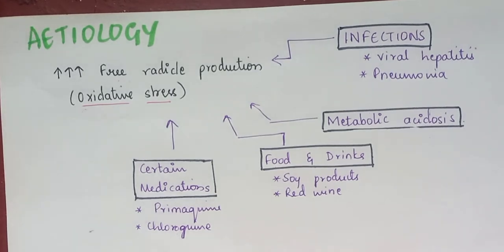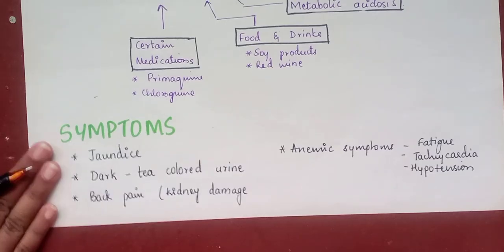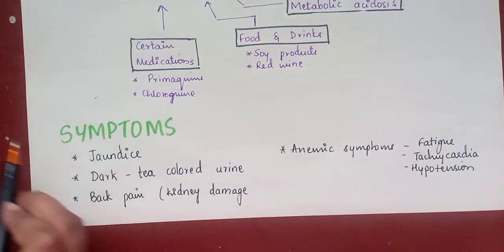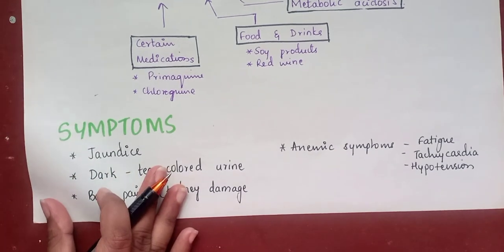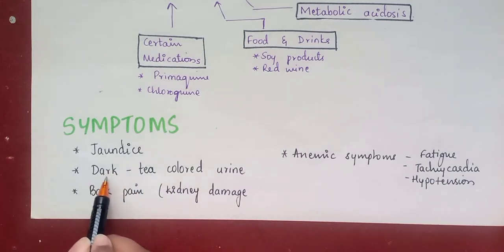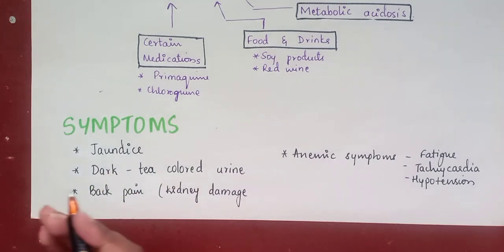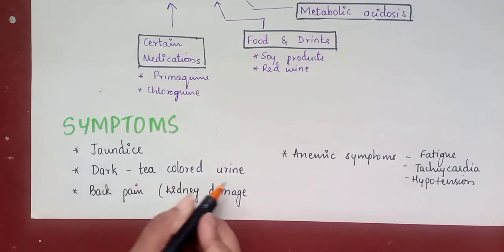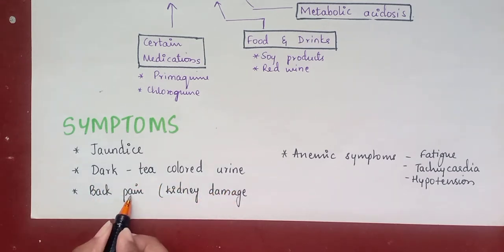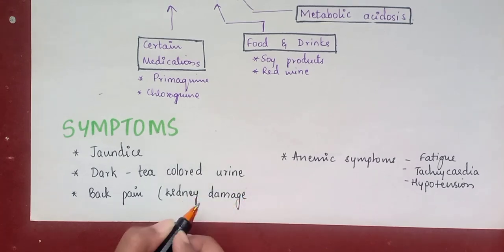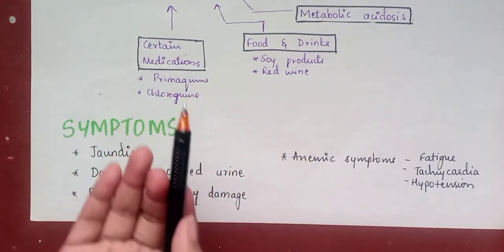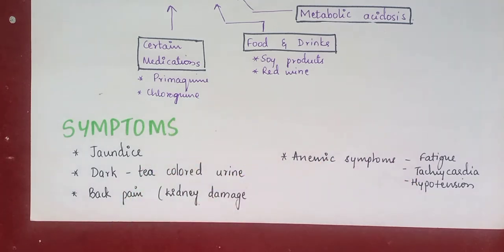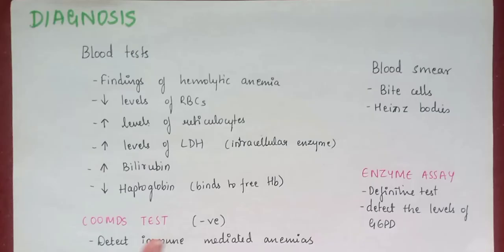Now let's understand the symptoms of G6PD deficiency. The main symptom is jaundice. The second is dark tea-colored urine due to excessive bilirubin in the urine, and there is back pain due to kidney damage associated with jaundice. Other anemic symptoms include fatigue, tachycardia, hypotension, and many other features of anemia.